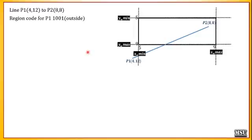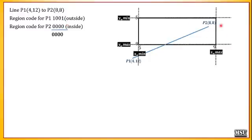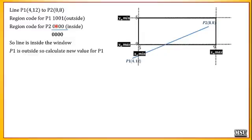The region code for p1 is 1001 — because p1 is on the left side of the window (b1 = 1) and above the top of the window (b4 = 1). The region code for p2 is 0000 since p2 is completely inside the window. We check whether there is any 1 in the same bit position — there is none. Performing the AND operation: 1001 AND 0000 = 0000. So this line is partially inside the window and must be processed. p1 is outside, so we want to calculate the new value of p1. Since p2's region code is completely 0, no new value is needed for p2.